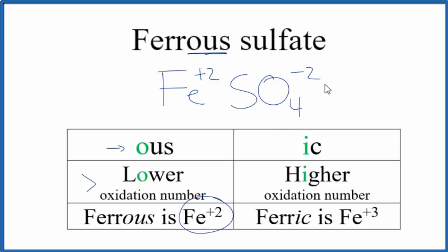The newer name, iron 2, is because of this +2 oxidation number. So iron 2 sulfate, also known as ferrous sulfate.